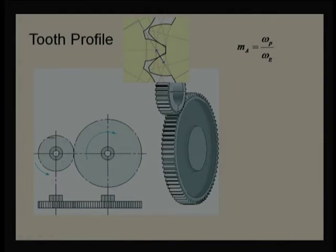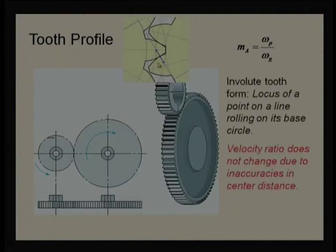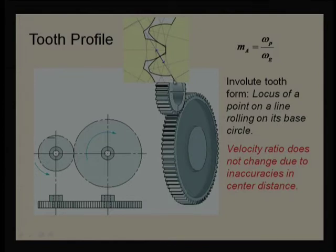We talk about the involute profile, and we say the involute profile is generally a locus of a point on a line rolling on its base circle. This is a line tangent to the base. So the involute is a locus of a point on the line rolling on the base. As the shaft rotation changes, the tangent position continuously changes — this is a continuous process of rolling on the surface.